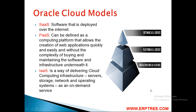In cloud computing there are different models. The cloud computing stack shows three distinct categories: software as a service, platform as a service, and infrastructure as a service. SaaS applications are designed for end users and delivered over the web. PaaS is the set of tools and services designed to make coding and deploying applications quick and efficient. IaaS is the hardware and software powering everything else — servers, storage, networks, operating systems — all comes under infrastructure as a service.